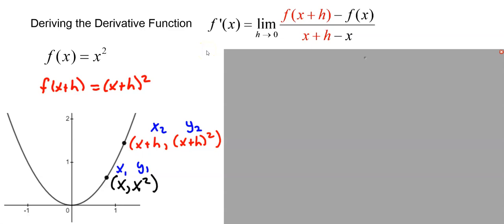Now we're going to look at how to derive an actual derivative function using a very simple example. We're going to use the function f of x equals x squared, which is this parabola right here.